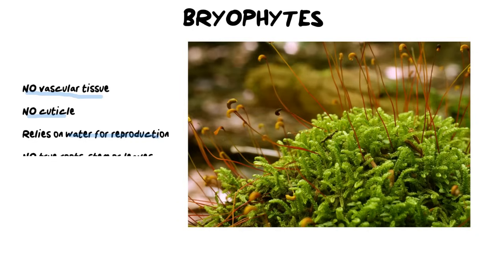Last but not least, bryophytes have no true roots, no true stems, or any true leaves. When we look at them from a distance they seem to have these structures, but because they don't have vascular tissue and don't have specialized tissues like other plants do, they don't actually have what we would call a leaf or a root. They have other structures — for example, instead of roots they have rhizoids, which is a structure we also find in fungi that essentially anchors the plant to any kind of wall, brick, or surface.